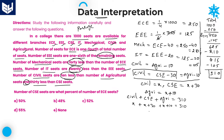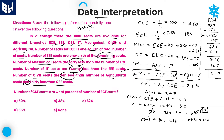From this: 3X plus 40 equals 310, so 3X equals 270, therefore X equals 90. Civil is equal to 90. CSE is equal to X plus 30, that is 90 plus 30 equals 120. Agriculture is X plus 10, which is equal to 90 plus 10, equals 100 seats for agriculture.